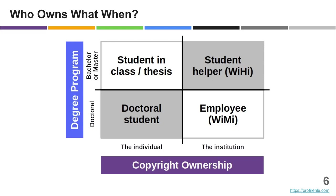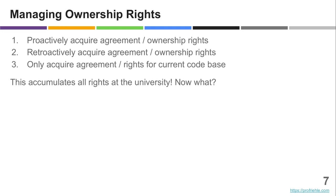Simply make sure to maintain 100% ownership by the institution — the university, usually. Ensure that everyone who contributes does so in a capacity where they are paid for their work, and then the institution owns 100% of the copyright. That means the institution can by itself decide to open source; otherwise you need to get everyone's agreement.